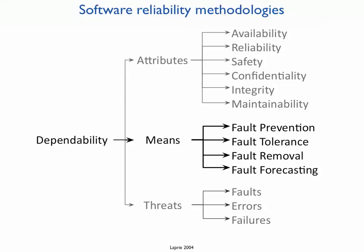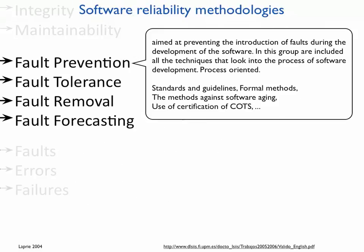For the classification of software reliability methodologies, I will use the dependability tree once more. Dependability has four means: fault prevention, fault tolerance, fault removal, and fault forecasting. Therefore, there are methodologies aimed at each of these four categories. Let's start with the first group — methodologies aimed at preventing the introduction of faults during software development.